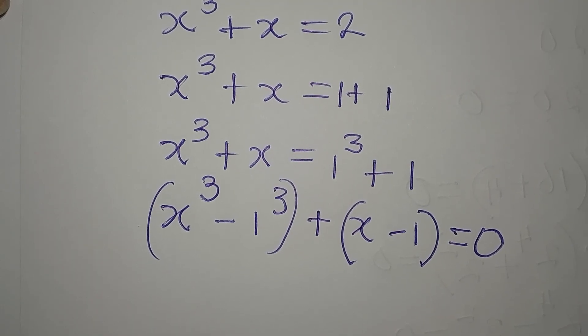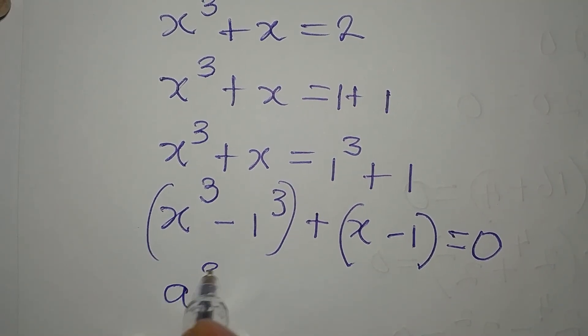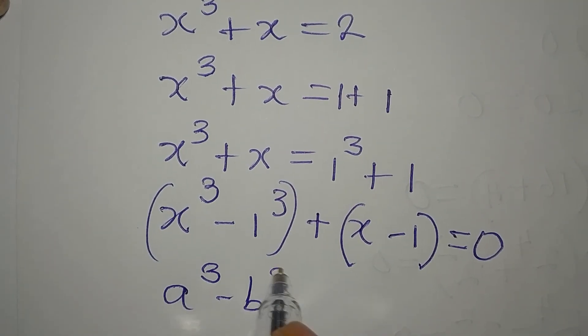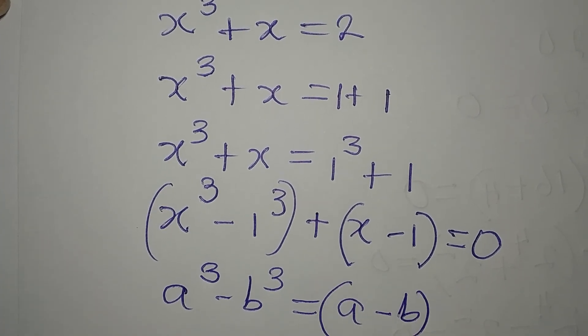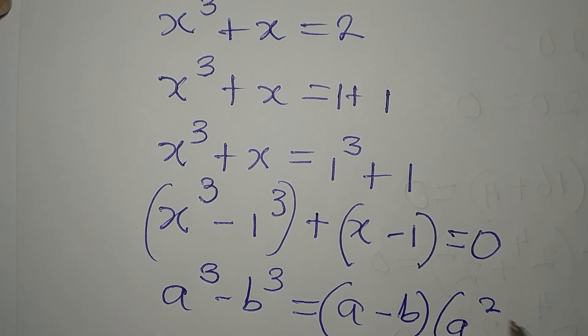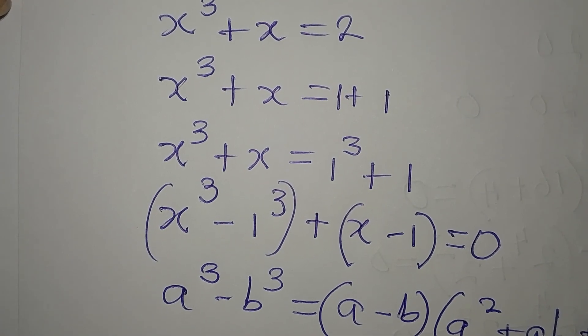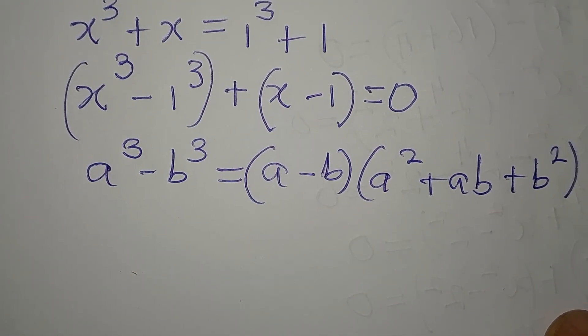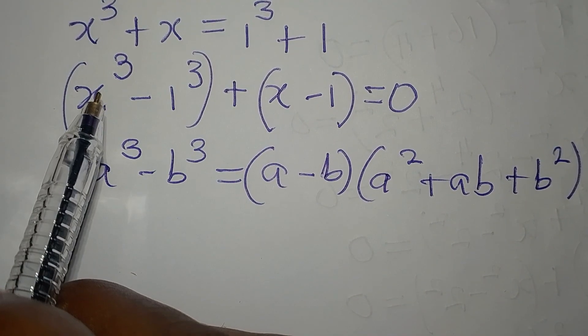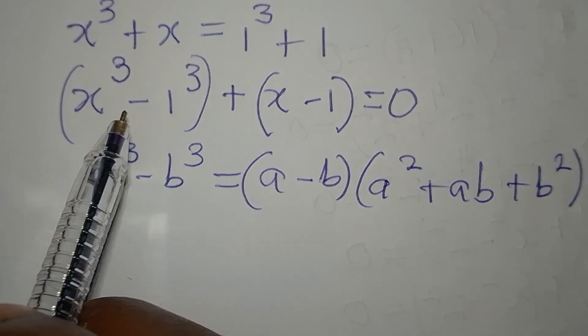Now, let's continue. This is difference of 2 cubes. If you have a cube minus b cube, this is the same thing as a minus b into a squared plus ab plus b squared. So our a is going to be x, our b is 1, so let's substitute into that.